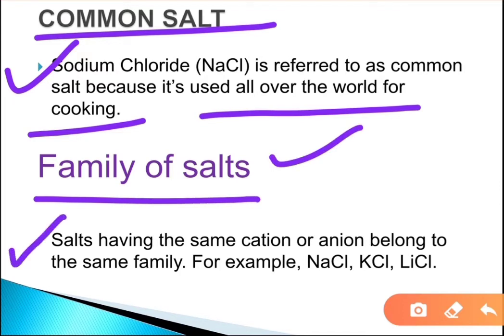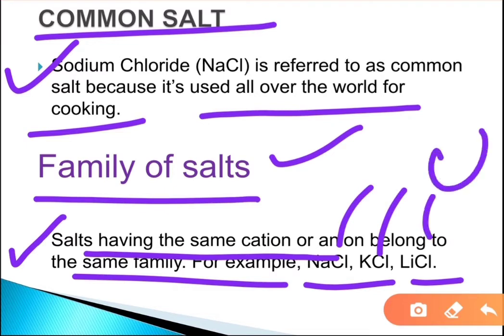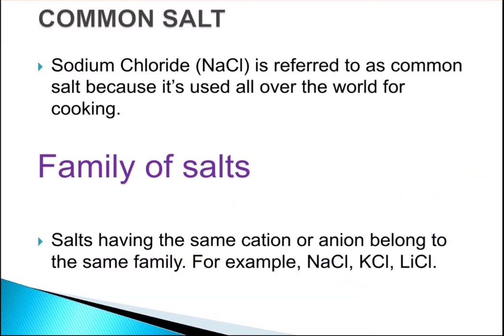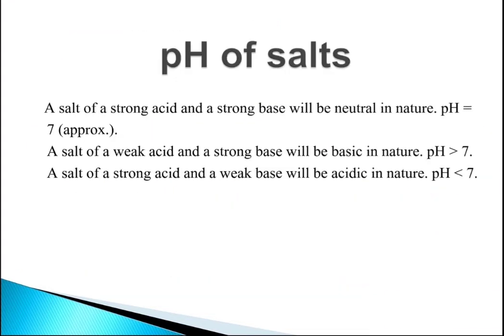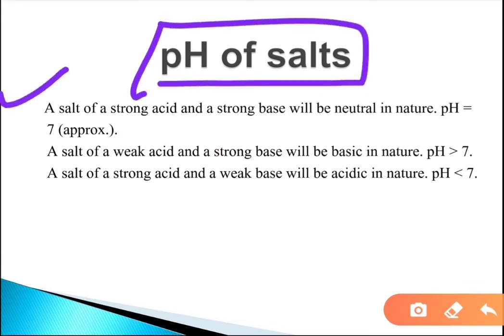Salts having the same cation or anion belong to the same family of salts. For example, NaCl, KCl, and LaCl all have a common chlorine anion. Regarding the pH of salt, a salt of a strong acid and a strong base will be neutral in nature and will have a pH of 7.